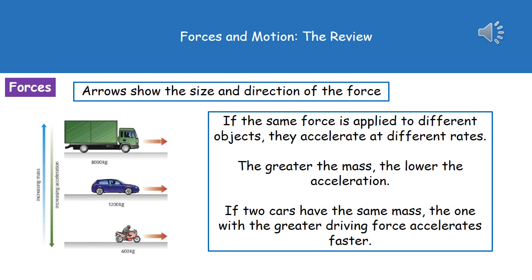In that diagram, we have three different vehicles: the lorry, which is 8,000 kilograms, the car, 1,200 kilograms, and the motorbike, 600 kilograms. They all have the same force acting on them to move them forwards. If we apply the same force to different objects, they accelerate at different rates. What we see in the pattern is that the greater the mass, the lower the acceleration will be. If we've got two vehicles that have the exact same mass, the one that's got a greater driving force is going to accelerate faster.